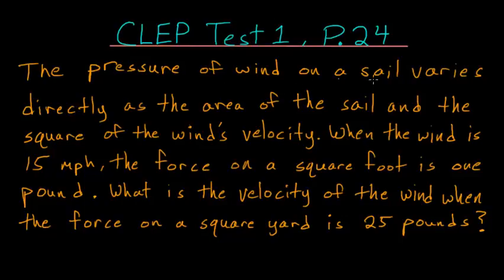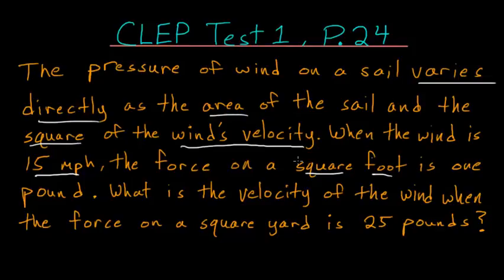The pressure of wind on a sail varies directly as the area of the sail and the square of the wind's velocity. When the wind is 15 miles an hour, the force on a square foot is 1 pound. What is the velocity of the wind when the force on a square yard is 25 pounds?